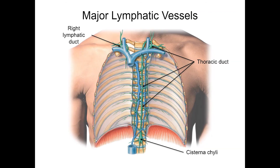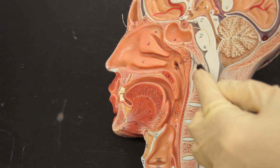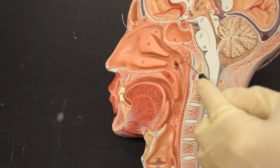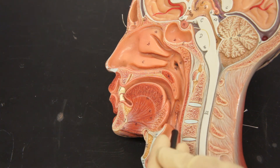Here's a depiction of the major lymphatic vessels. We have the right lymphatic duct, draining into the right subclavian vein, and then we have the thoracic duct. This bundle down here is the cisterna chylae. On this model we can see the pharyngeal tonsils or adenoids, the lingual tonsils, and the palatine tonsils.